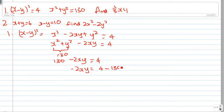Bringing 130 to the other side of the equation, you get -2xy equals 4 minus 130, which is -126.